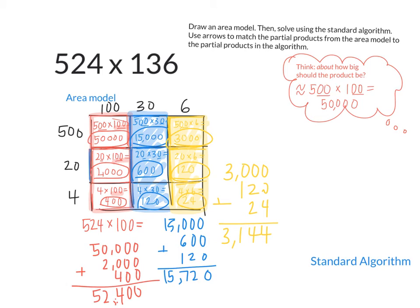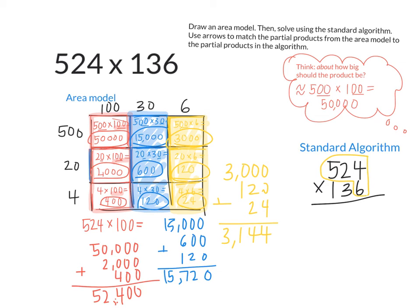Now let's do the standard algorithm and see if we can find those same partial products. So when we do the standard algorithm, we have 524 times 136. We're going to start by doing 524 times 6. What's 4 times 6? 24. What's 6 times 2? 12, plus 2, 14. What's 6 times 5? 30, plus 1, 31. Oh, what do you know? The partial product is 3,144. See that?